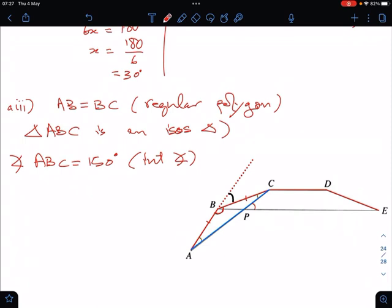And your angle BCA, this tiny one, will be 180 minus 150 divided by 2, because it's an isosceles triangle. That will give you 15 degrees.